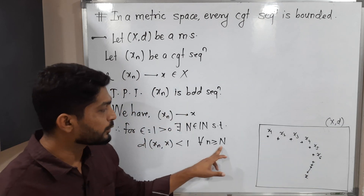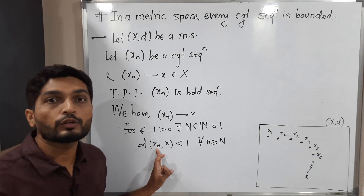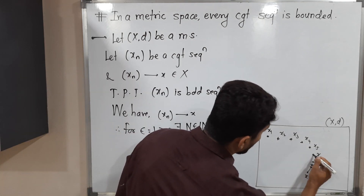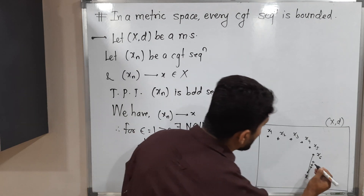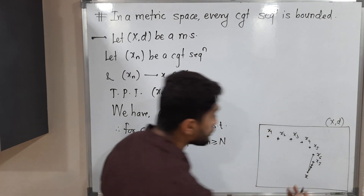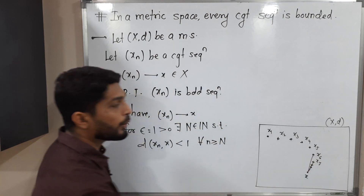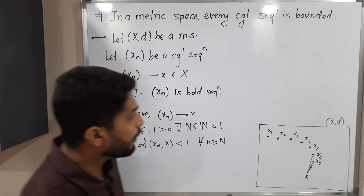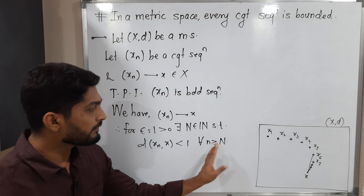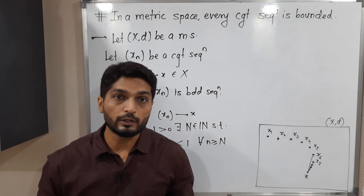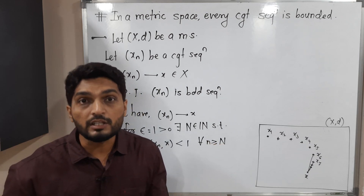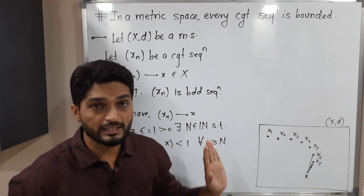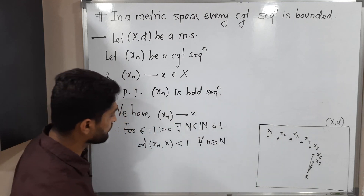In the diagram, suppose N equals 6. That means all terms whose index is greater than or equal to 6 have distance from x less than 1 — so d(x6, x) < 1, d(x7, x) < 1, and so on for all remaining points. But we also need to consider the previous terms: x1, x2, up to x_{N-1} — for this example, x5.